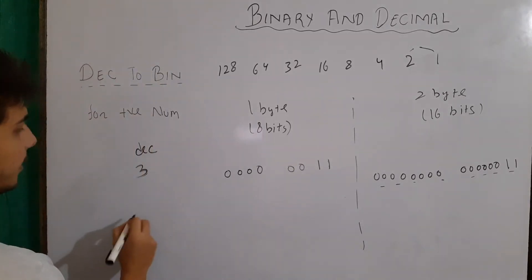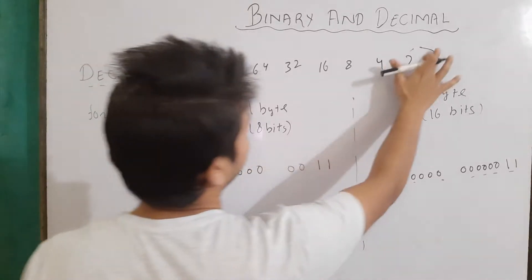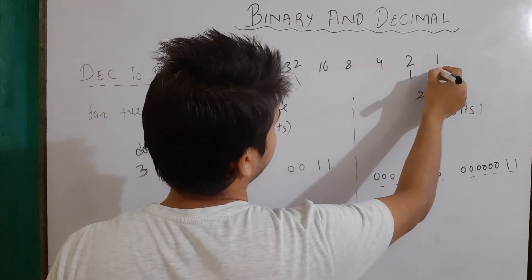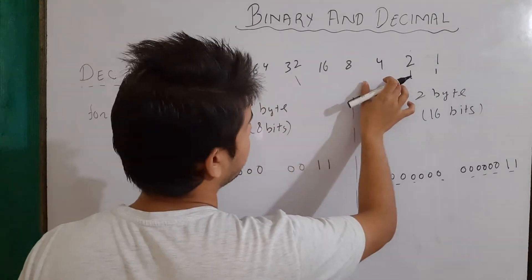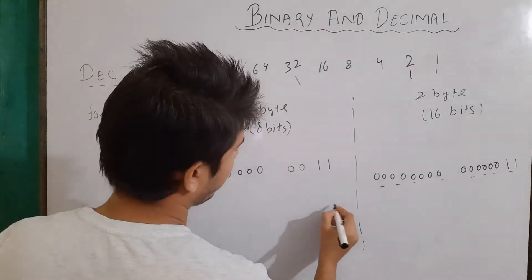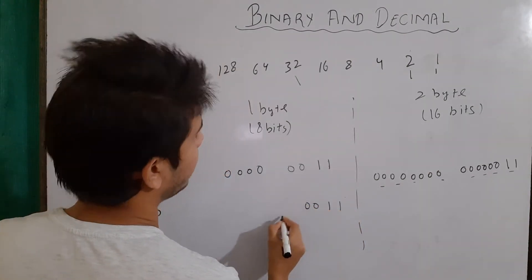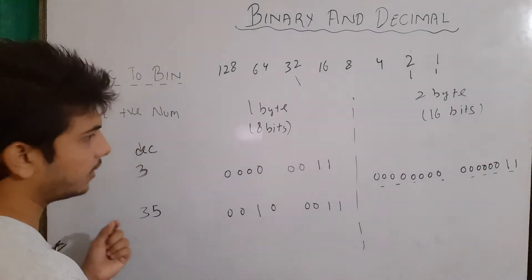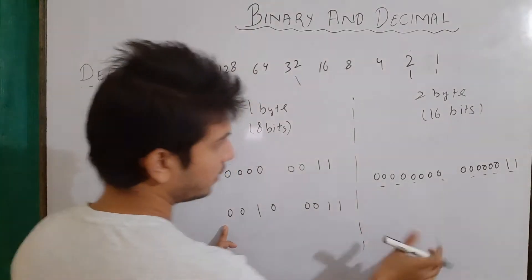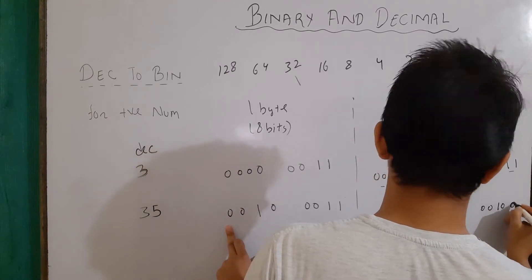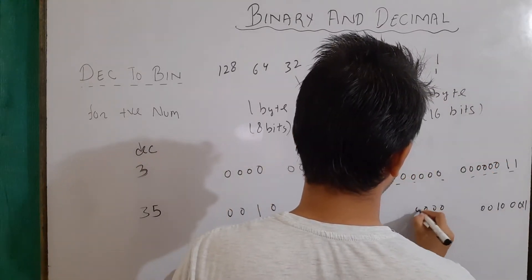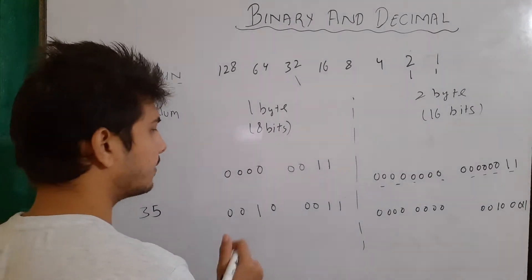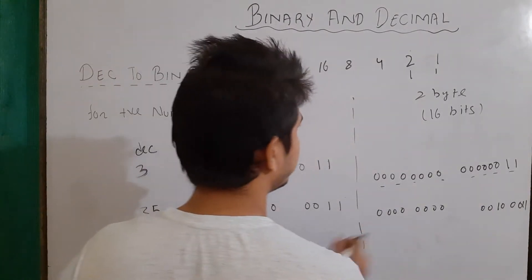Let's take another number, 35. We find which numbers add up to 35 — that is 32, 2, and 1. In those positions we write 1 and in the remaining places we write 0. So the 8-bit binary equivalent for decimal 35 is 0 0 1 0 0 0 1 1. For 16-bit, the same 8 bits appear on the right and 8 zeros on the left. A 16-bit number can hold a larger range than an 8-bit number.